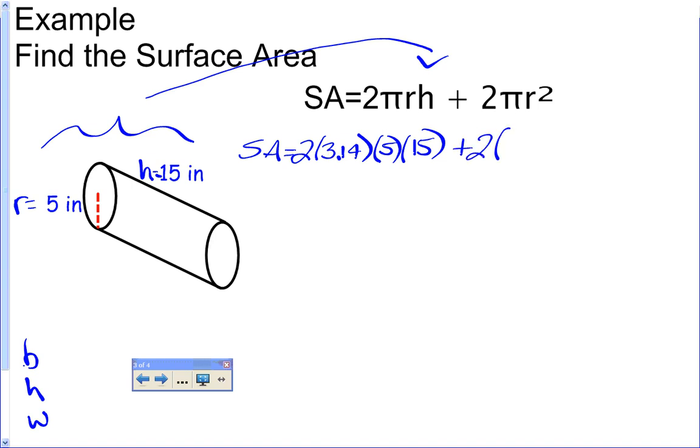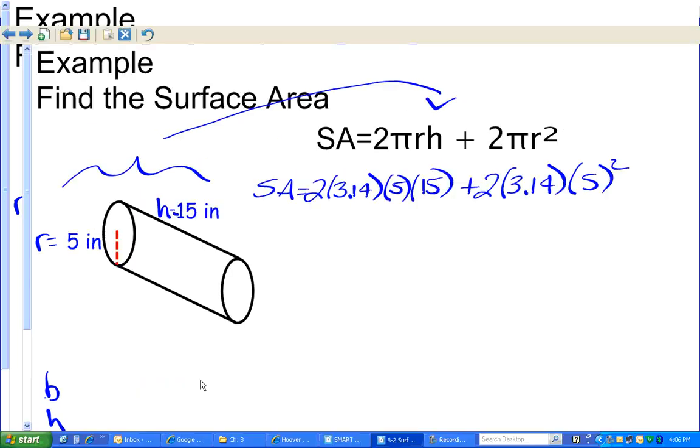Plus 2 times pi, which is 3.14, times radius squared, so that's 5 squared. If you wanted to shortcut this when you plug this in, you could have written 25 here, because 5 squared is 25. But I wanted to do it step by step so you can see exactly what we're doing.